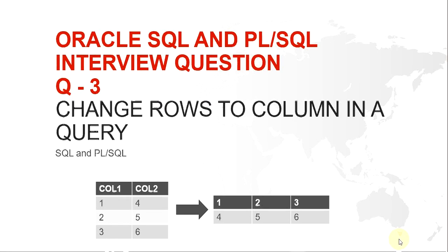Hello guys, my name is Kishan and today we are going to look at an Oracle SQL interview question. This is a question where you have to perform something like changing rows into columns. A simple example would be if you have a table with two columns, column 1 and column 2, having data as 1 and 4 in the first row, 2 and 5 in the second row, and 3 and 6 in the third row.